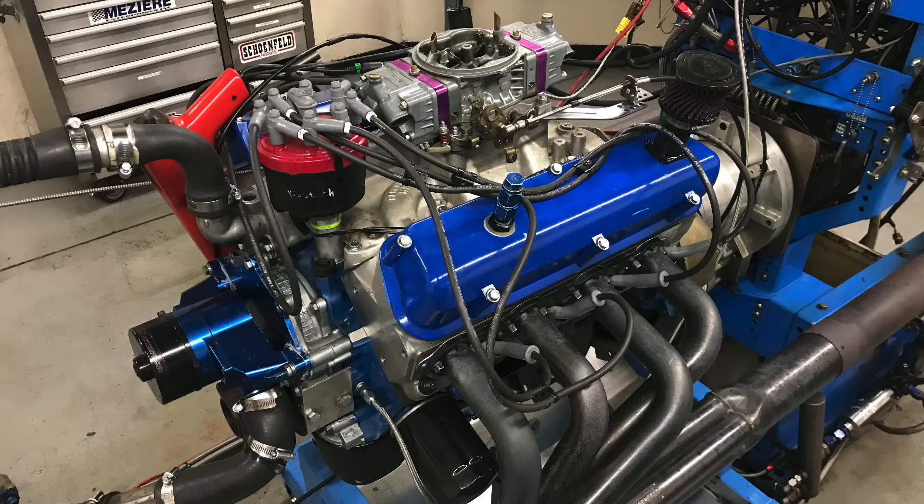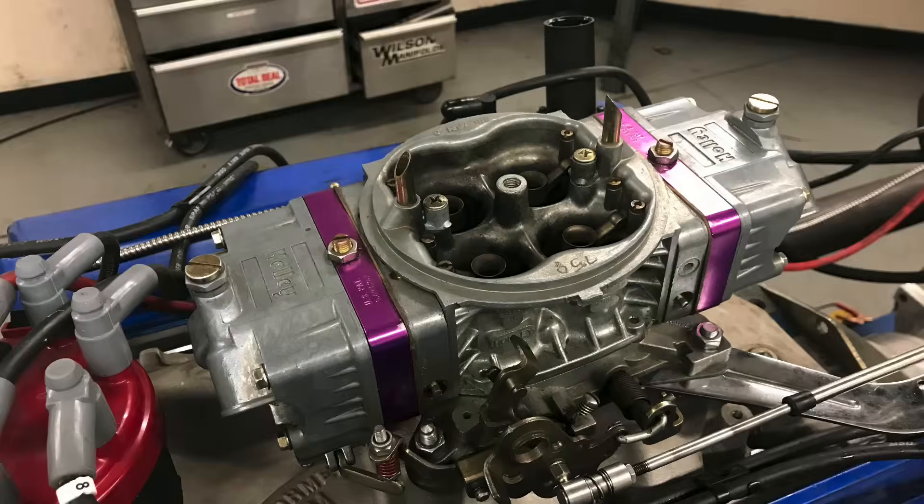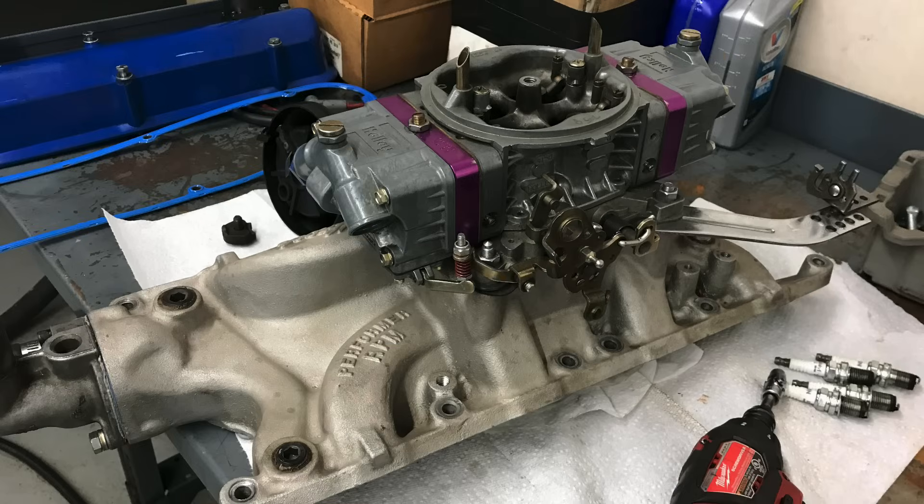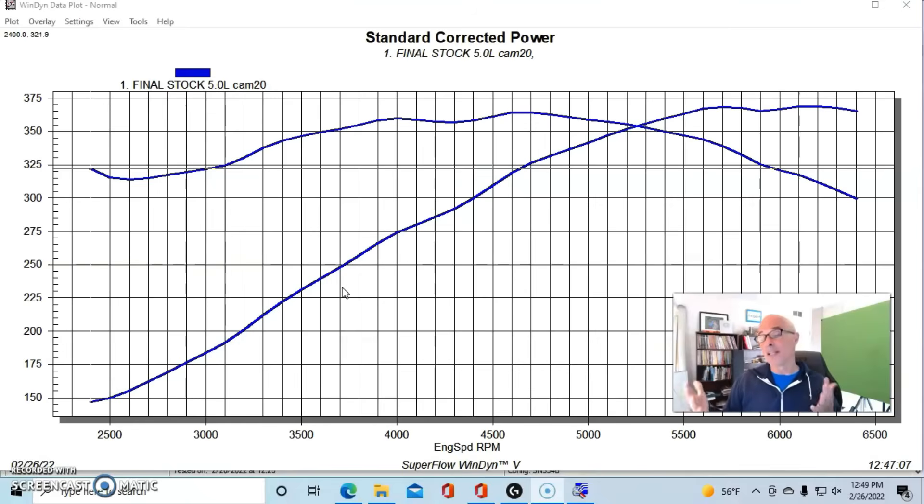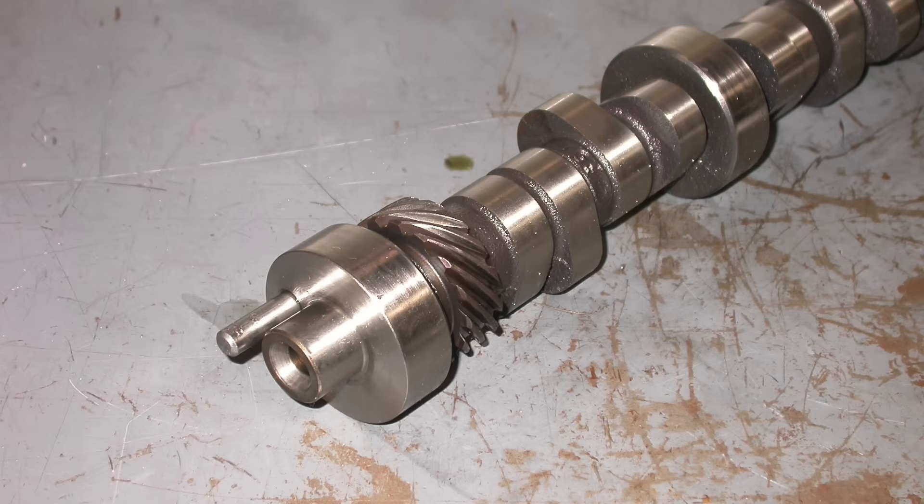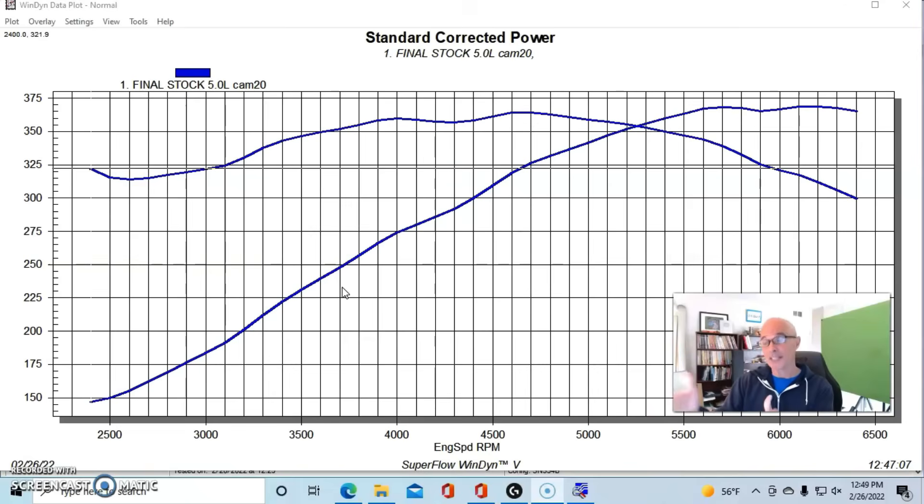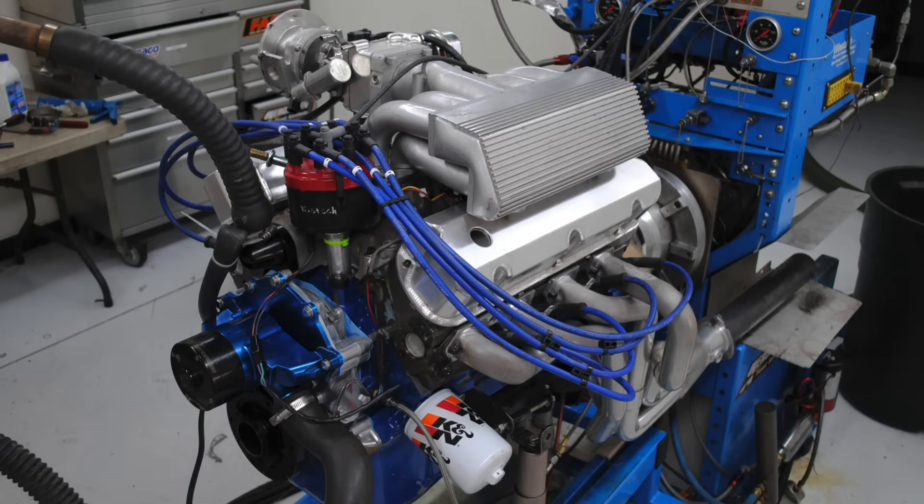But the important thing to note is that this motor had basically everything else going for it. It had a 750 carburetor, it had a good intake manifold, it had lots of head flow, it had good headers, it had everything that it needed. And really, the only thing that it was missing was the camshaft. So when we run the same cam upgrade on this combination with everything going for it, the gains that we get from that camshaft are going to be higher than they were on the milder combination.